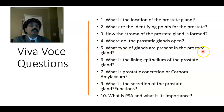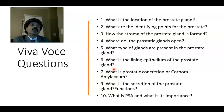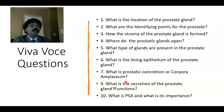What type of glands are present in the prostate? We have tubular acinar glands, around 30 to 50 in number. What is the lining epithelium of the prostate gland? It may be columnar epithelium or pseudostratified columnar epithelium. What is the prostatic concretion, or corpora amylacea? It is a hard substance formed inside the gland of the prostate, around two millimeters in size, with a laminated appearance.